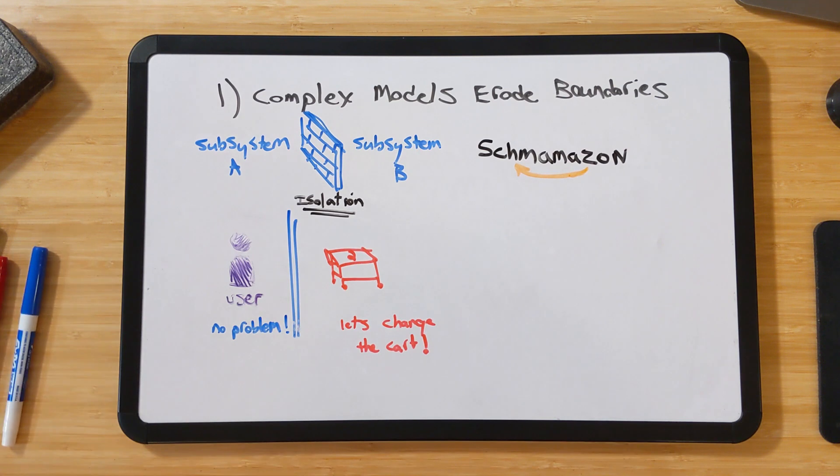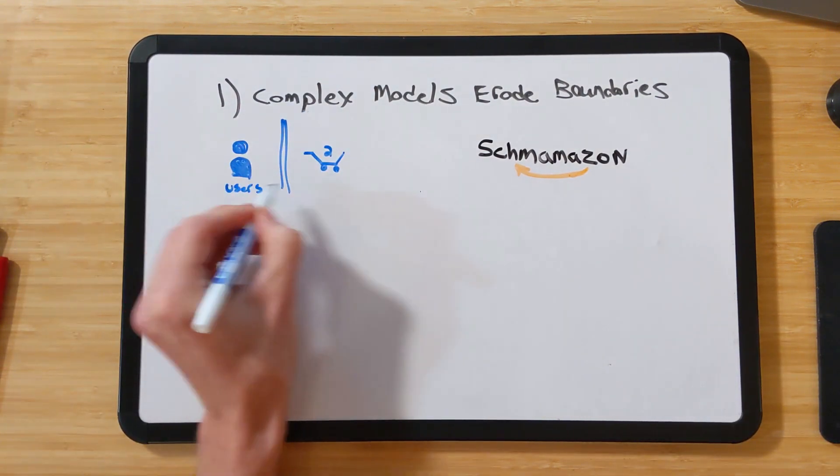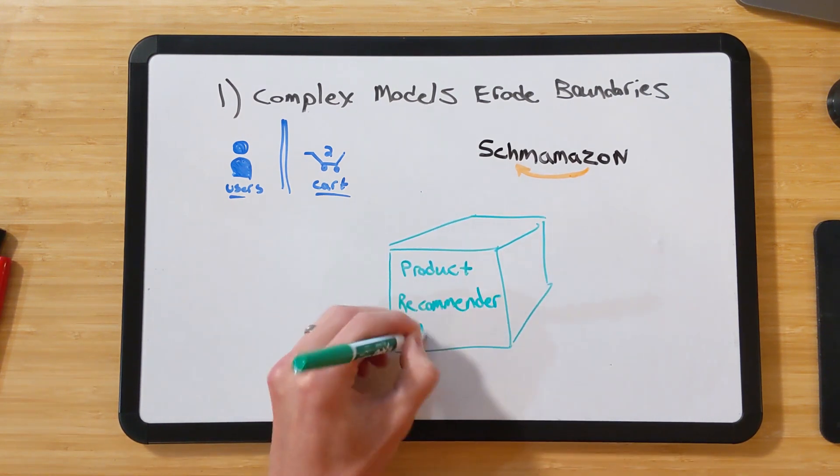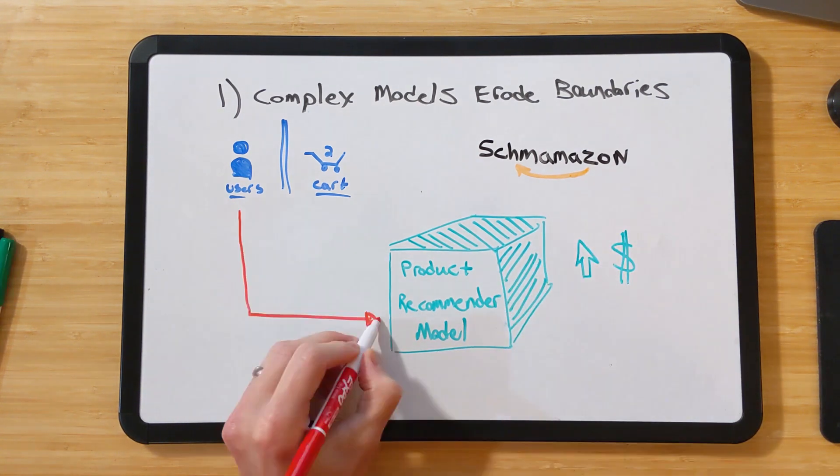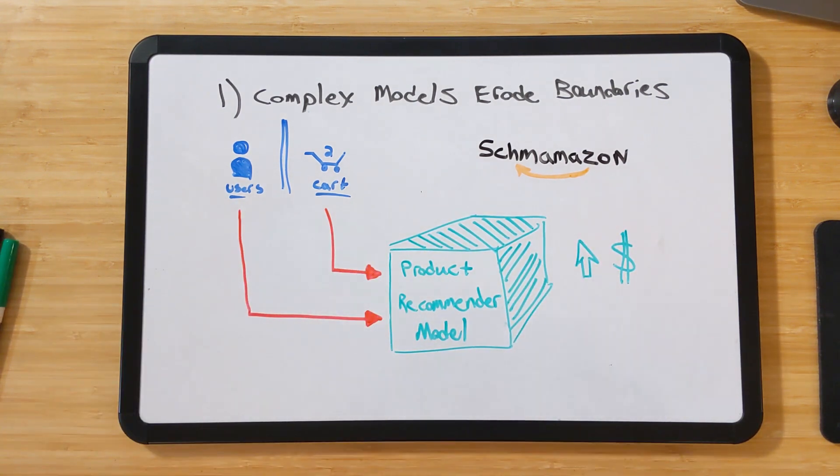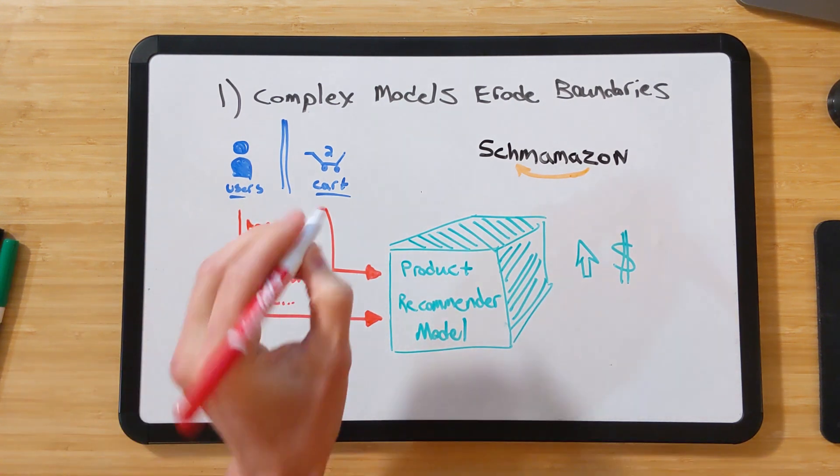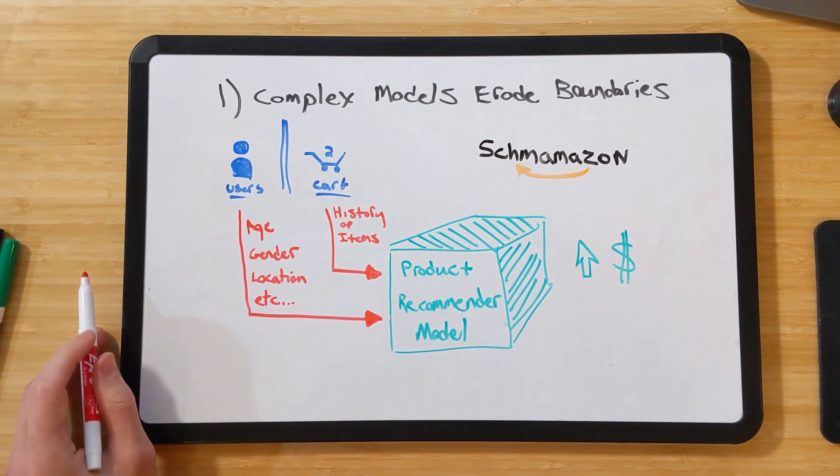But because Shmamazon is a leading technology company, we want to start working on building a machine learning product recommender system to boost sales. There are lots of input signals we could use to collect and feed into this model, including information about the user account, such as age, gender, address, etc., and information from the shopping cart, history of the items that were added and removed and when. And boom, just like that,